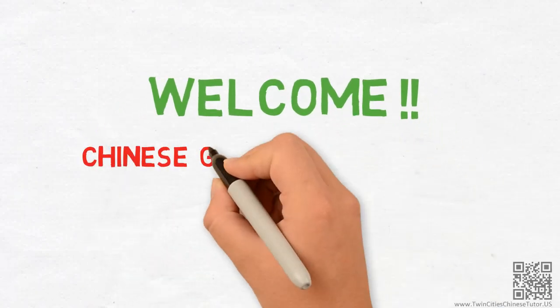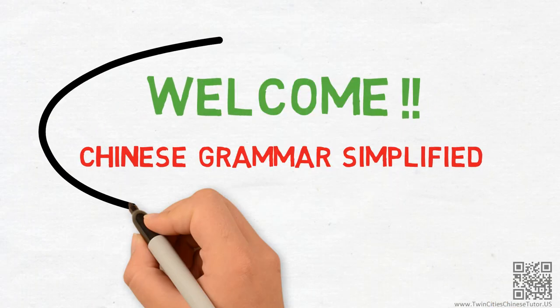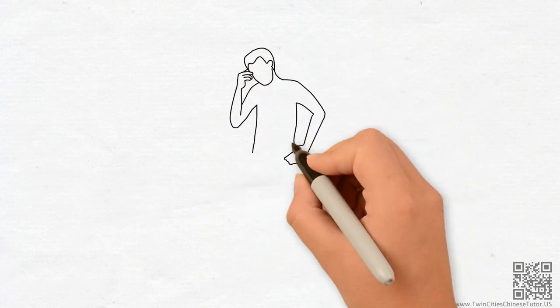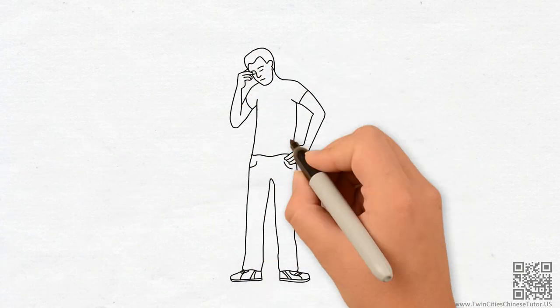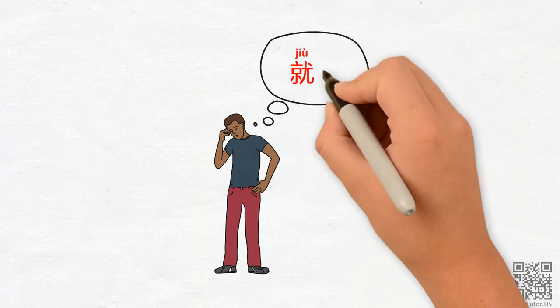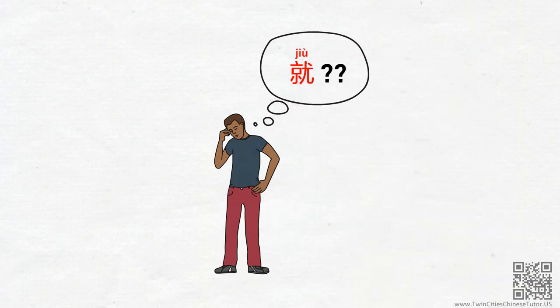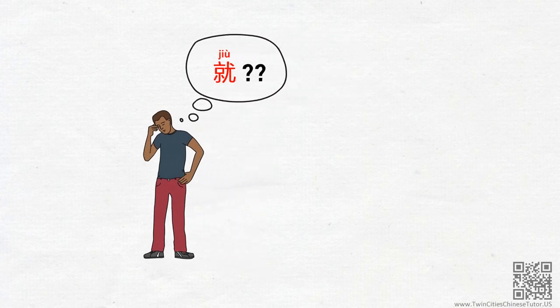Hello everyone, welcome to Chinese Grammar Simplified. For almost every student learning Chinese, including my friend Taylor, one of the most confusing parts of learning Chinese is figuring out how to use the word jiu. If you look it up in a dictionary, you might find that there are more than 70 definitions of this word.